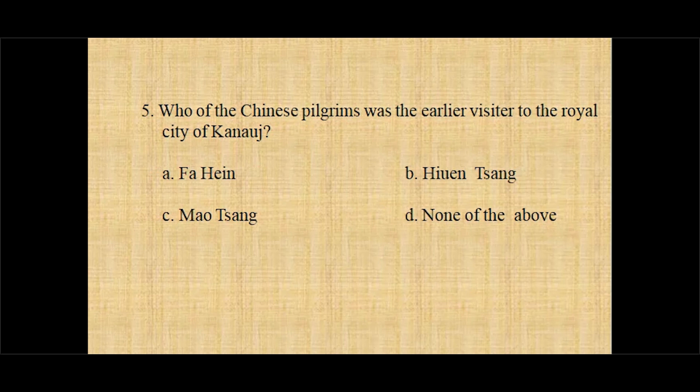Question number five: Who among the Chinese pilgrims was the earlier visitor to the royal city of Kanauj? Option A Fahian, option B Xuanzang, option C Mao Zhang, option D none of the above.